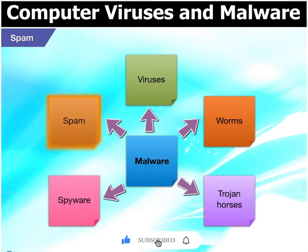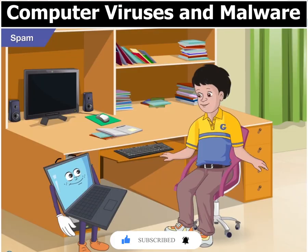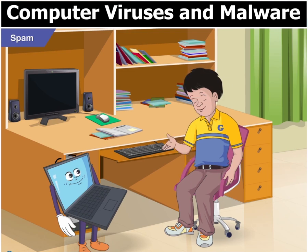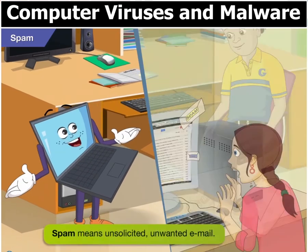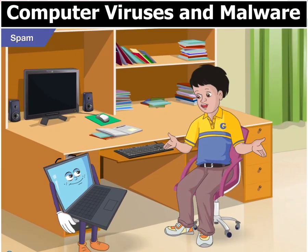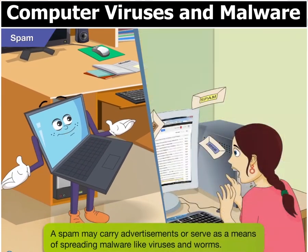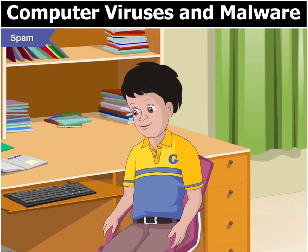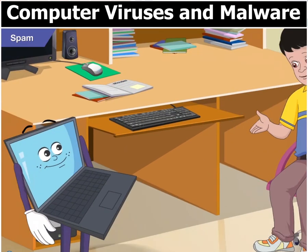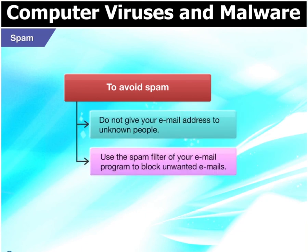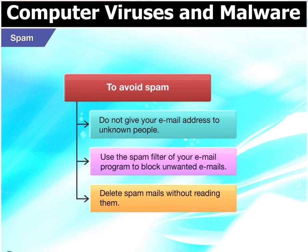Yet another malware is spam. Yes Toggle, once I saw my sister deleting a lot of mails. She did not even read them. She told me they were spam mails. What exactly is spam? Spam means unsolicited, unwanted email. But what harm can emails do even if they are unsolicited? A spam may carry advertisements or serve as a means of spreading malware like viruses and worms. To avoid spam, you should: A. Never give your email address to unknown people. B. Always use the spam filter of your email program to block unwanted emails. C. And never read spam mails — delete them as soon as you receive any.